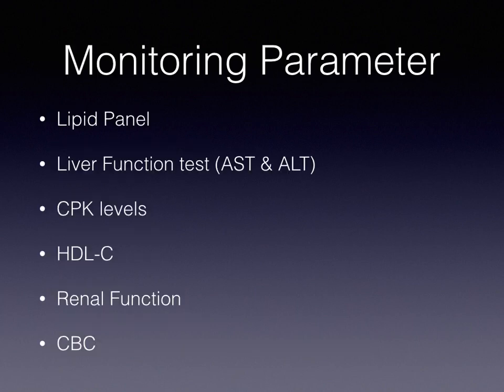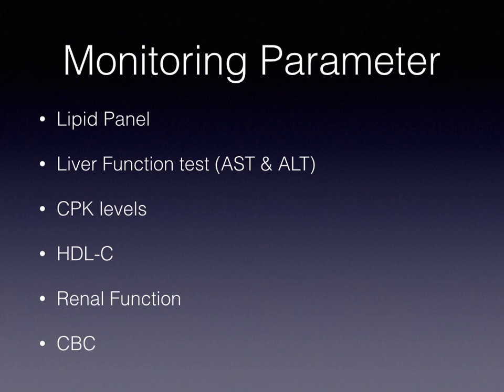Monitoring Parameters: Lipid levels should be checked periodically. Liver function tests should be done at baseline and periodically throughout therapy. CPK levels should be checked in patients with symptoms of myopathy. HDL levels should be checked within the first few months. Renal function tests should be done in patients with renal impairment or at risk for renal insufficiency. A CBC should be done periodically during the first 12 months.